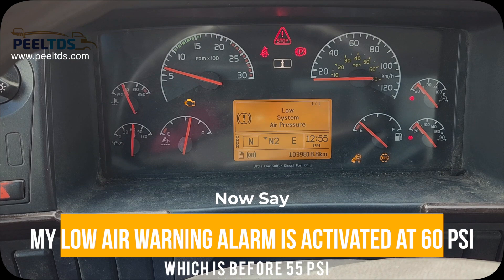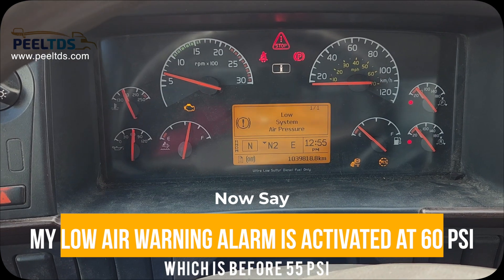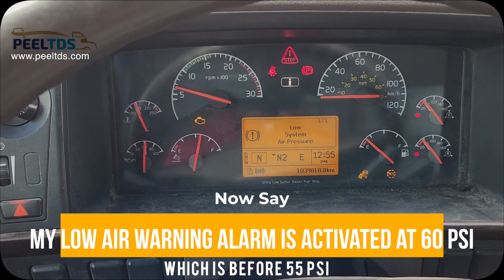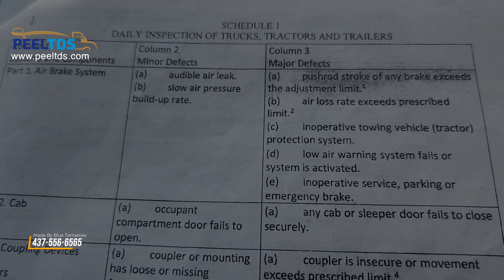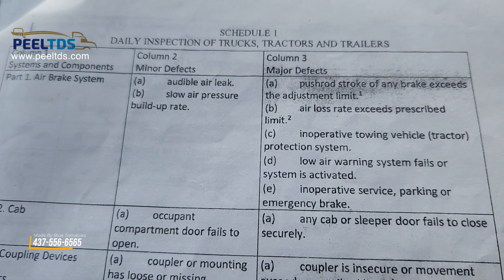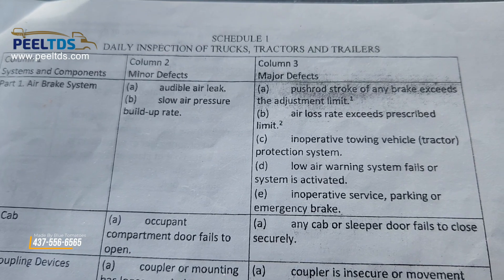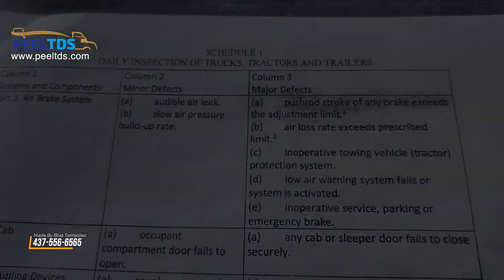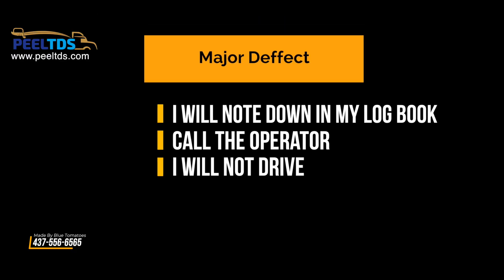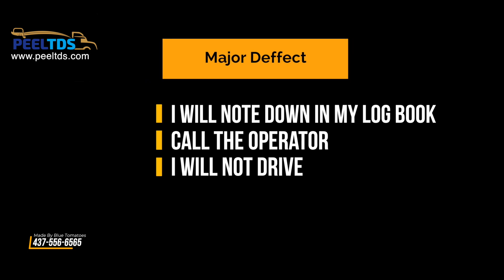It activated at 60 psi, which is before 55 psi — that's good. Now read: minor or major? If the low air warning system fails or is activated, it is a major defect. I will note it in my logbook, call the operator, and I will not drive.